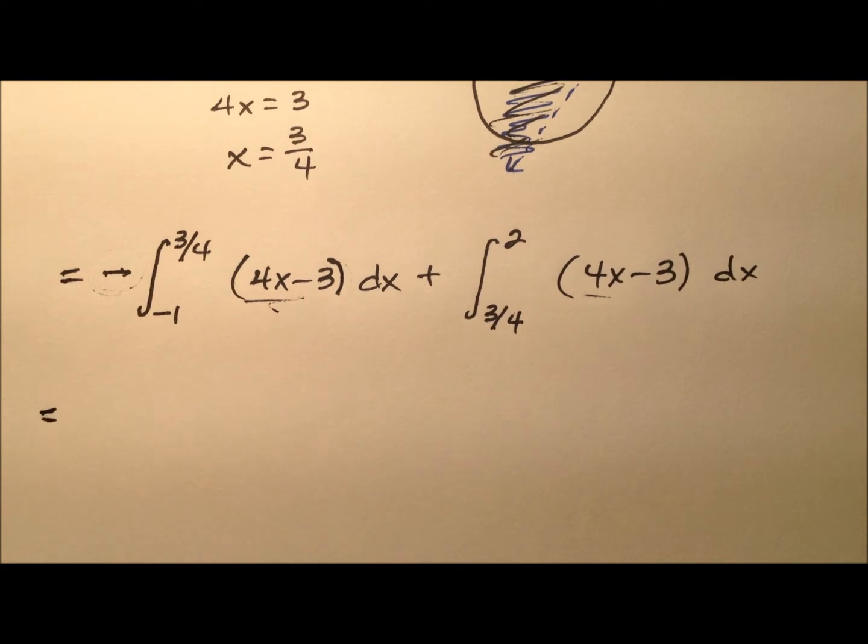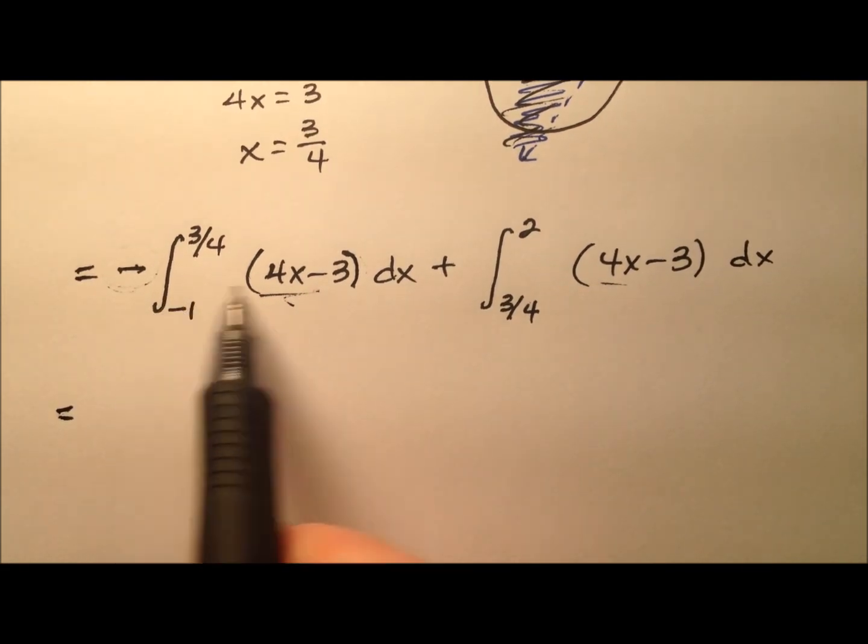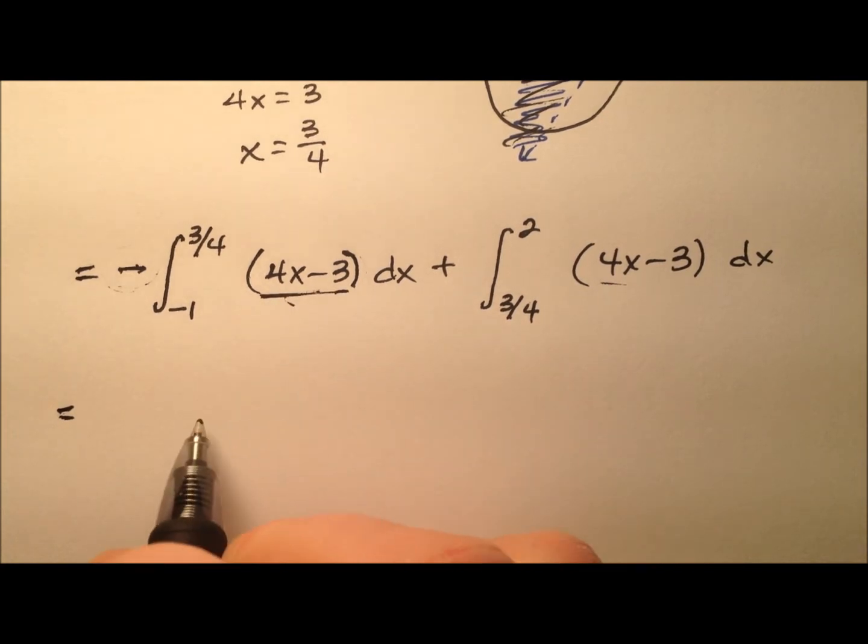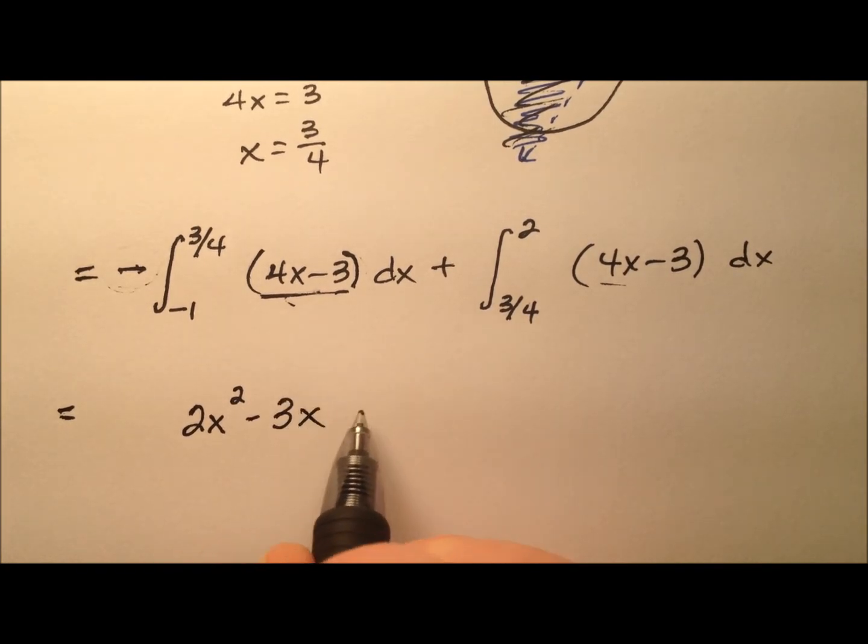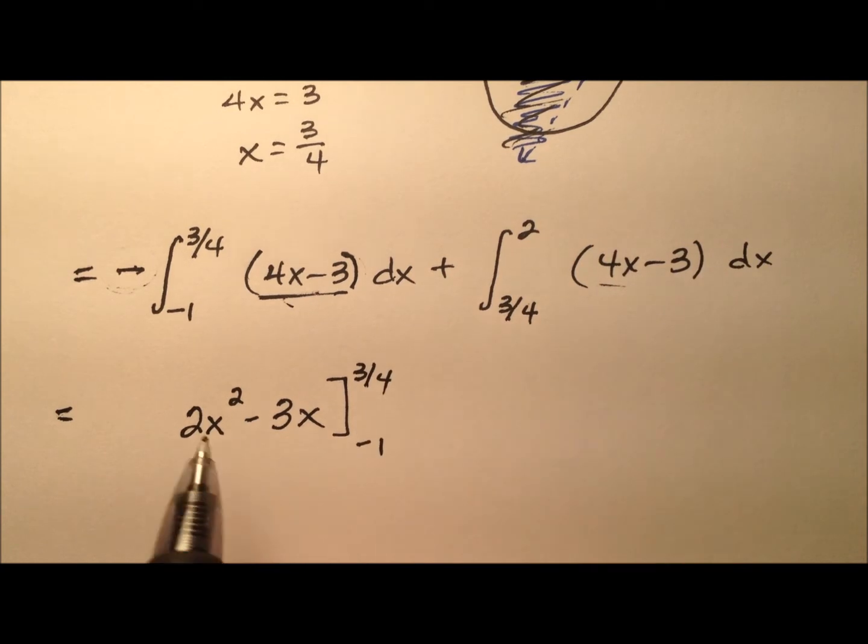So at this point, it's just going to be a lot of evaluation here. So let's go ahead and figure out what this integral is going to be. So for 4x, that'll be 2x squared, and then minus 3x. And of course, we're going from negative 1 to 3 fourths. And also, we had that negative out front.